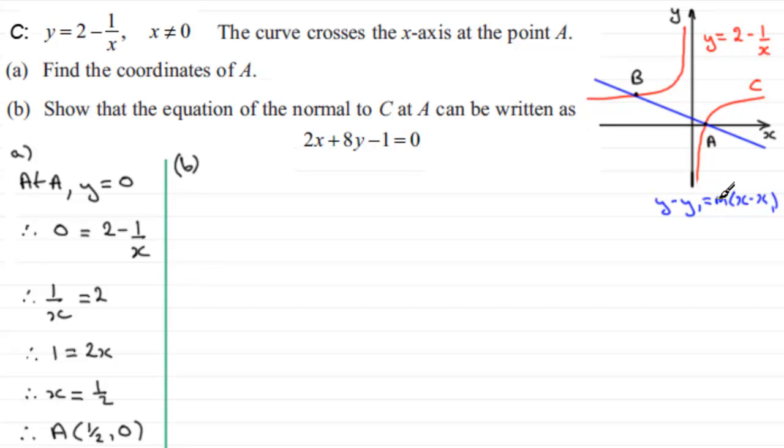So, we start off by getting m, the gradient first of all of the tangent at the point A. And we do that by differentiating the equation of the curve. So, we need to take our equation and get it in the form that's suitable for differentiating. This term is not in the correct format. So, we can change this to 2 minus x to the power minus 1. Remember, 1 over x to the power n is x to the power minus n. And this is x to the power 1 in this case.